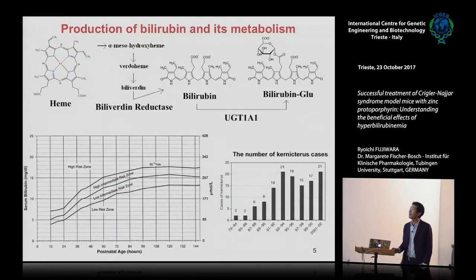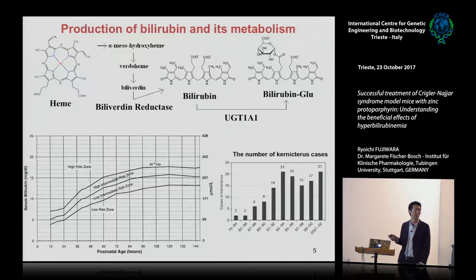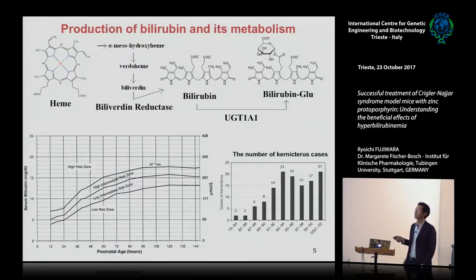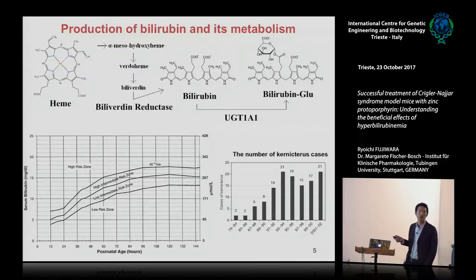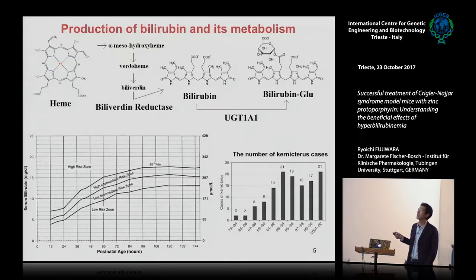Today I'll be talking about bilirubin a lot. Bilirubin is the end product of heme catabolism. Heme is the molecule contained in red blood cells, and this is a degradation of heme to bilirubin. Bilirubin is a neurotoxic compound — it's really bad for humans, especially for the brain. But we have this isoform UGT1a1, and it can metabolize bilirubin to a glucuronide. So this is one of the systems to detoxify bilirubin.